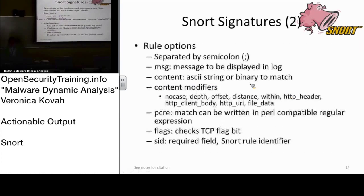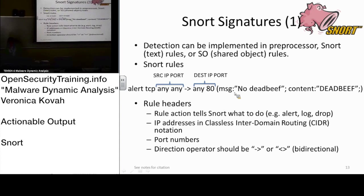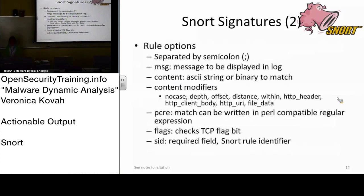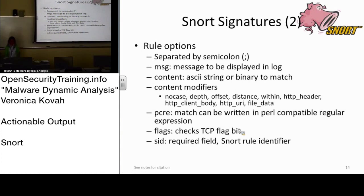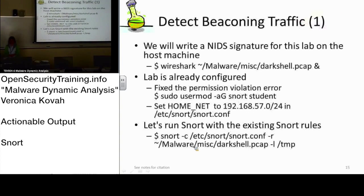In the rule options — the rule body — you can put message, content, and content modifiers. You can specify whether content should be case sensitive or case insensitive. There is also a PCRE option, which stands for Perl Compatible Regular Expression. You must have a SID here, otherwise you will get an error message from Snort.